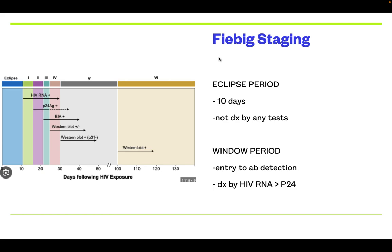Now we will consider when each test becomes positive — these are the Fiebig staging phases of HIV. The first phase is the Eclipse phase. Not a single test is positive here. It is around 10 days, and we can never diagnose HIV in the Eclipse phase by any method.